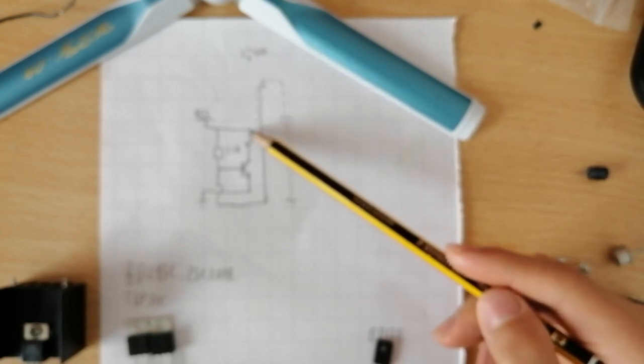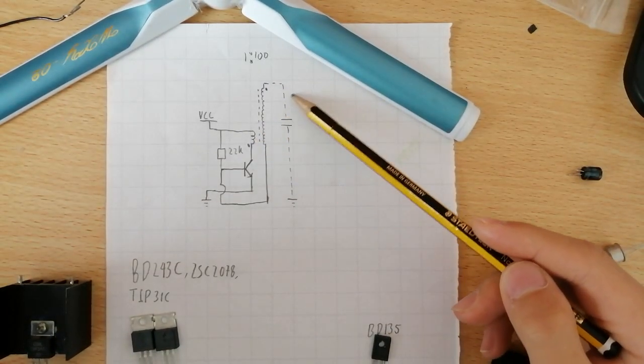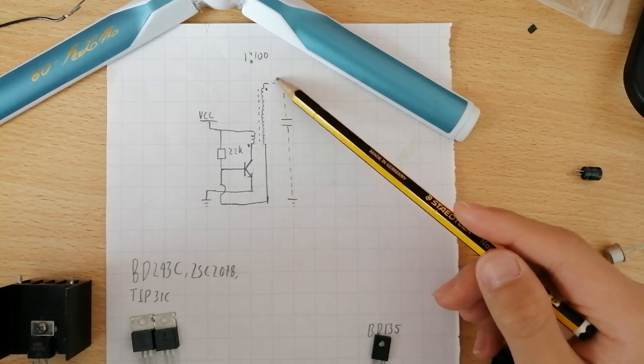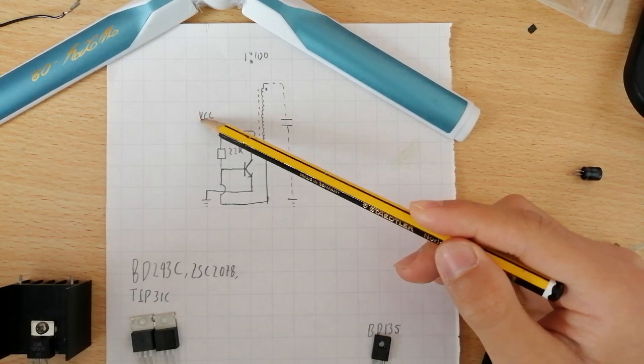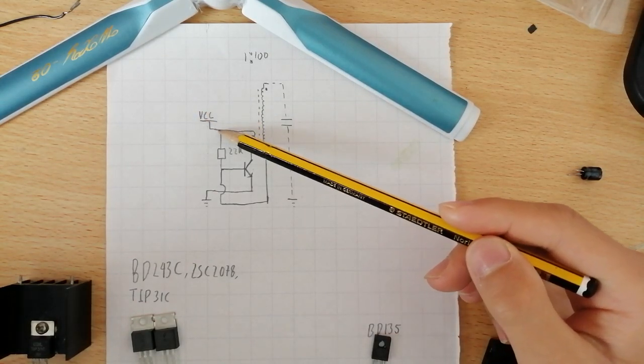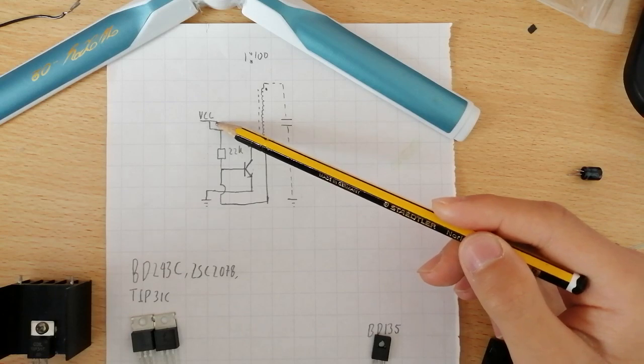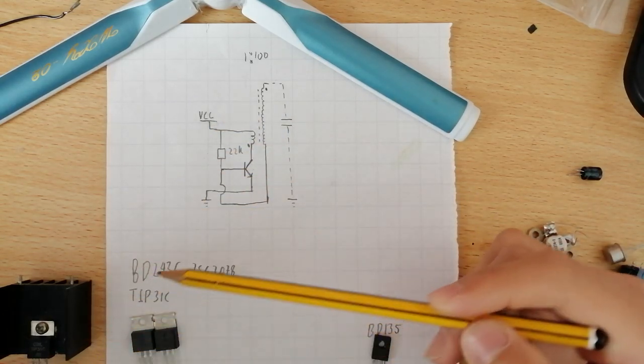So it means if you have one turn for the primary side, then you will have 100 turns for the secondary side. Now back to the VCC for the power supply. You can use the voltage from 9V or 12V to 30V. It's all dependent on your transistor.